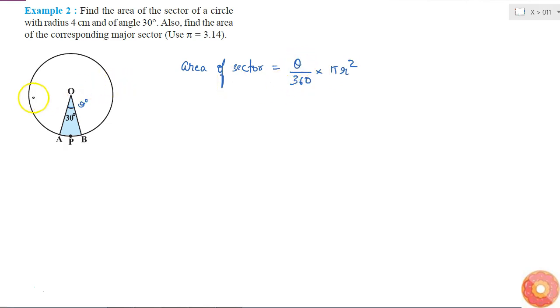Similarly, if I consider only half of the circle, theta equals 180 degrees and I get half pi r squared. Therefore, going by that same logic, if I have a sector having angle theta, the area of sector should be theta by 360 into pi r squared.